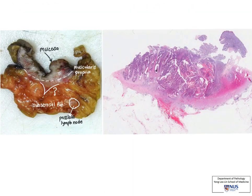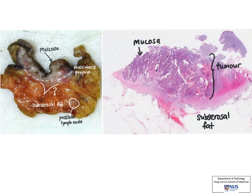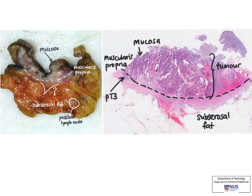Here is the corresponding histological image of the slice. To orientate again, here is the mucosa, the tumour occupying the submucosa and muscularis propria, and the subcerosal fat beneath. The dotted line delineates the extent of the muscularis propria, and the tumour appears to be dipping into the subcerosa and will be considered T3 in the TNM staging. If the tumour invades further into the serosa, it will be considered T4. The hardened and whitish area previously seen on the gross specimen turned out to be an area of fibrosis devoid of malignant glands.